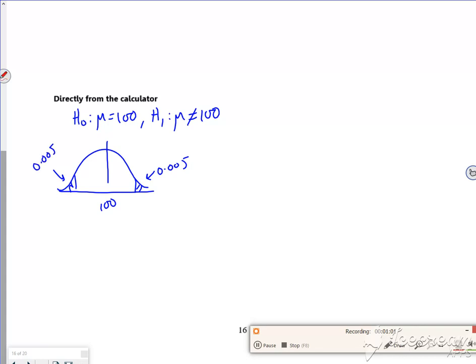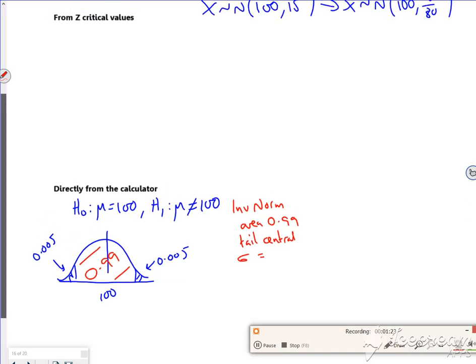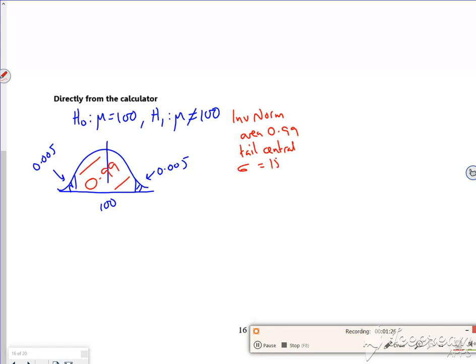Now here's the thing with the calculator. If I do an inverse normal with my area, if I'm going to use the tail as central, I need to think opposite. So if that's 1% split between the edges, it's 0.99 in the middle. So my area is 0.99, sigma is my 15 over root 80, and mu was my 100. If I do that, it gives me two values.